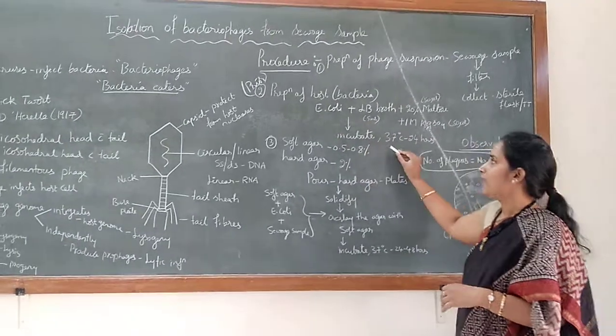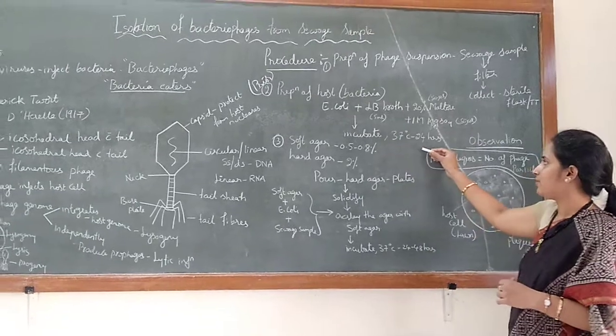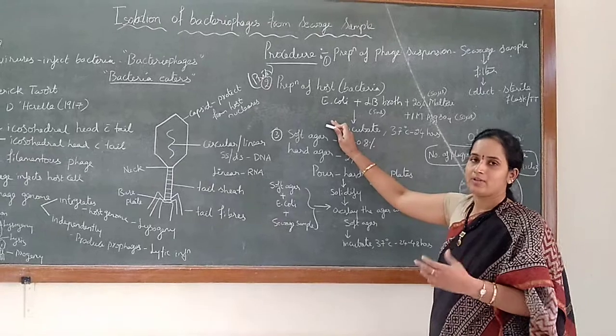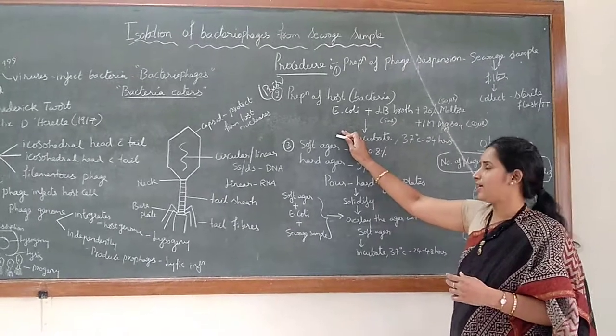About 350 microliters will be added to the 5 ml of LB broth which has been inoculated with the E. coli culture. Incubate this culture at 37 degrees centigrade for 24 hours. So by this we will have the host cell or the bacteria culture with us.